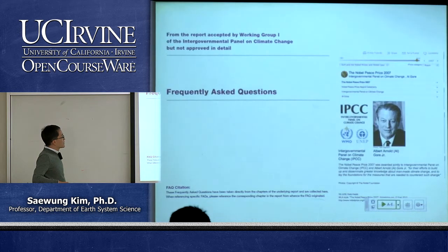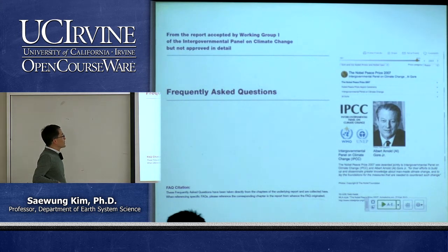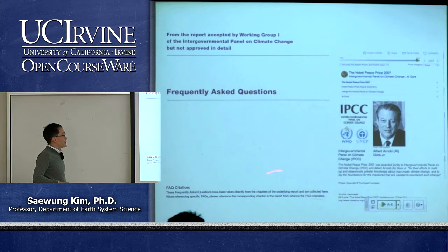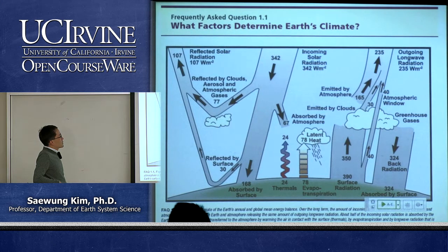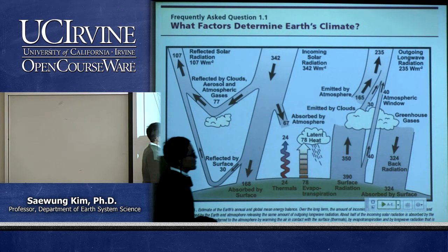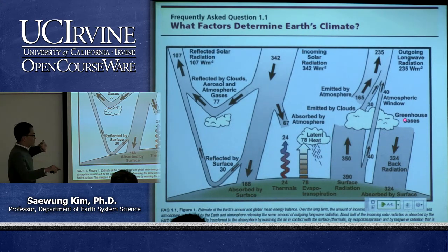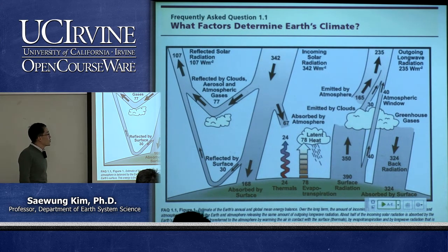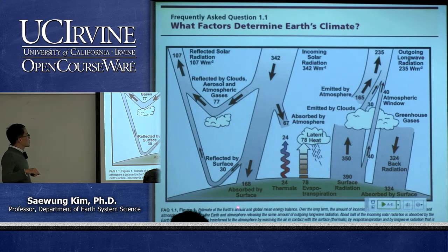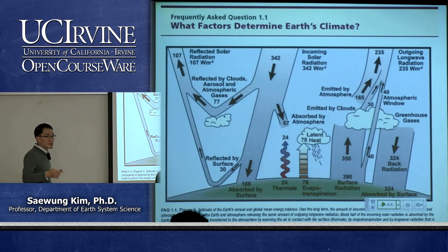What factors determine Earth's climate? Energy from the sun, energy coming out from Earth, and some of that energy is trapped in the atmosphere by greenhouse gases — reflected back to Earth's surface, warming it. We call this the greenhouse effect. The fraction of incoming solar energy not absorbed but reflected away is called albedo. A lot of people also confuse climate and weather. Climate is basically the statistics of day-by-day weather.